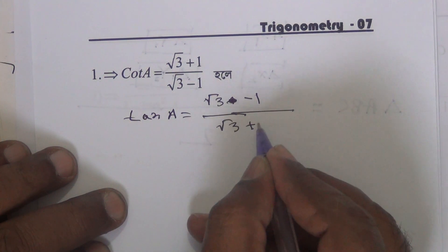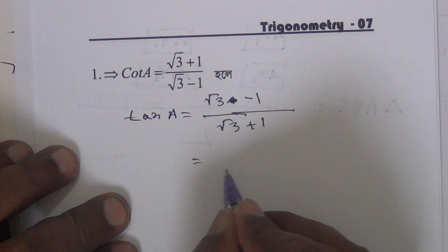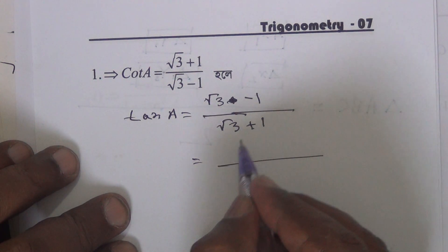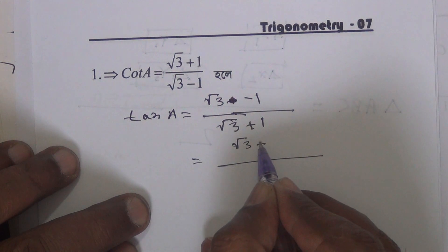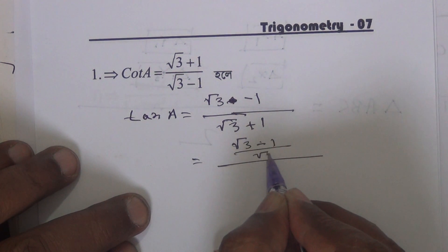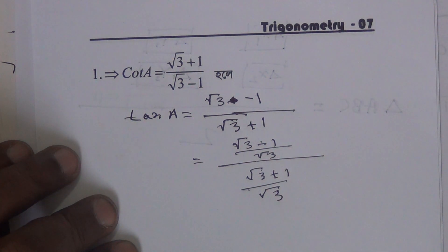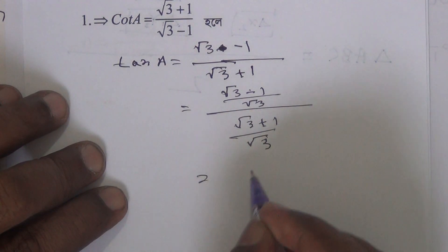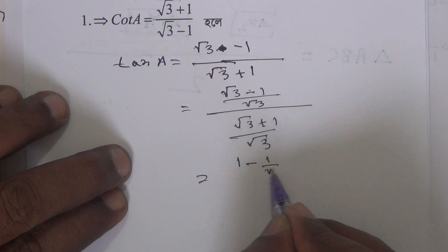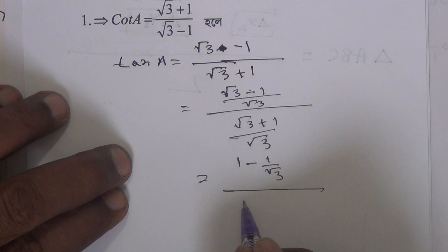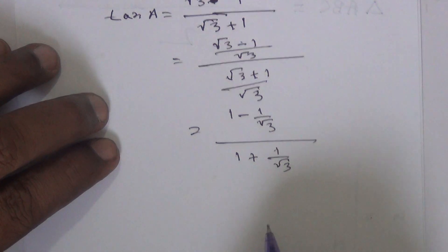So, root 3 is 1 by root 3, plus 1 by root 3. Now we see that we are using root 3 to root 3, and we are using root 3 to root 3.